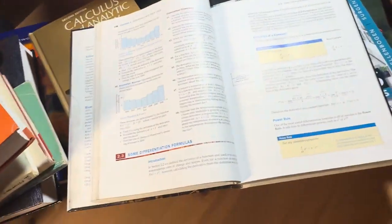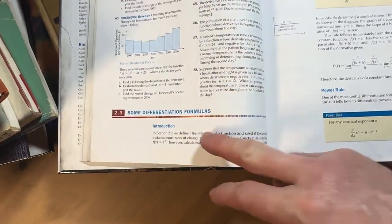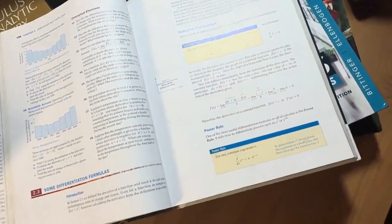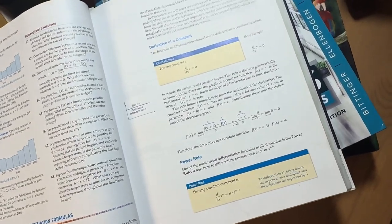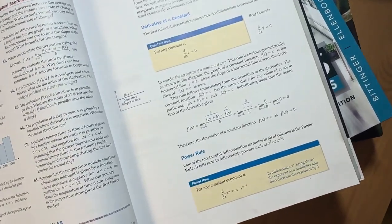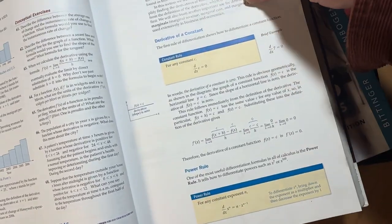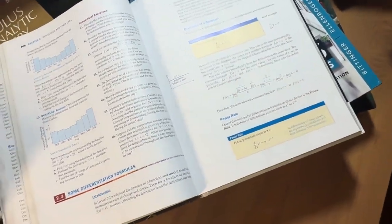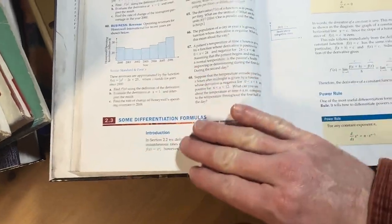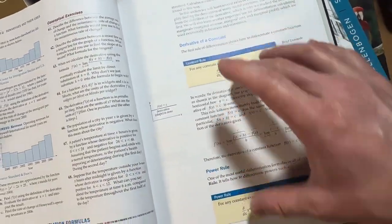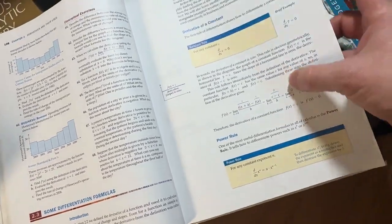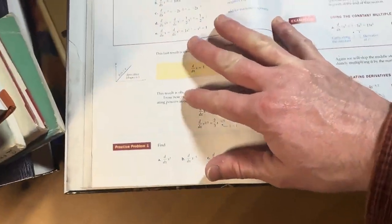You could, in theory, start right here with some differentiation formulas. You probably wouldn't want to start here. You probably want to start with limits. But in theory, you could start here and learn about derivatives. I like the layout. I love these yellow boxes. It's very formulaic. And the examples are very, very clean. They show you everything.